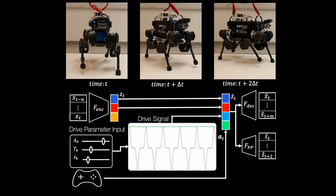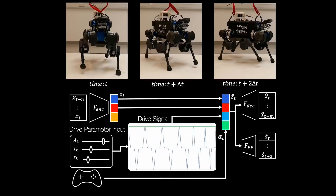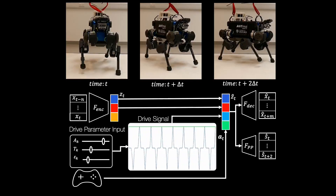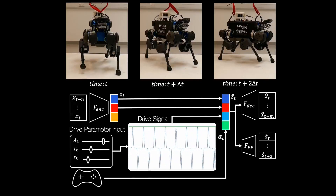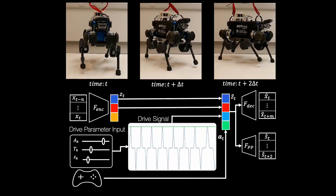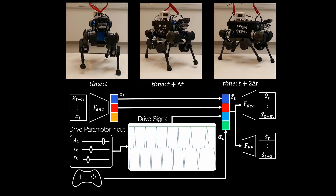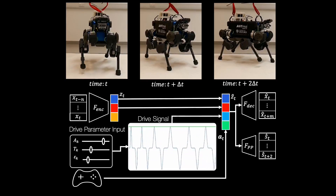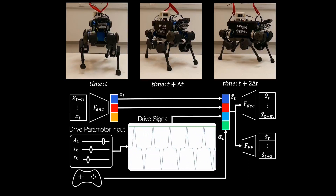We address these limitations by learning a generative model over locomotion data. This creates a structured latent space and enables detection and mitigation of disturbances. Specifically, we use a variational autoencoder, or VAE, to create our structured latent space which acts upon the robot state.